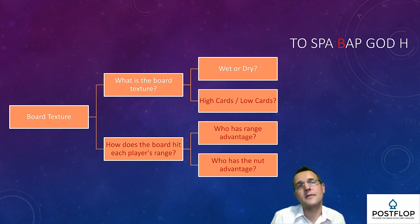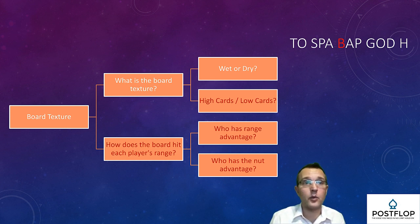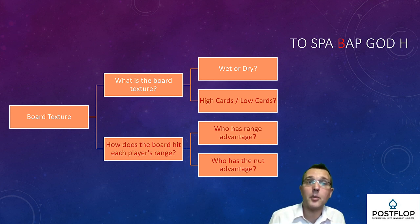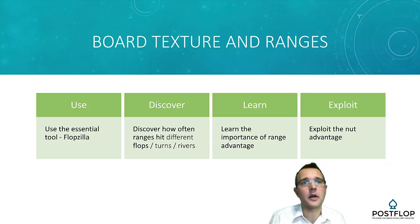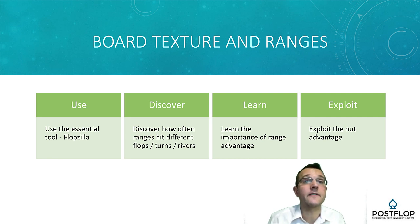The other concept is nut advantage. This is particularly important when pots get large or when planning for large pots. Which player is more likely to be holding the strongest possible hand? It's not always the player with the range advantage. If your opponent holds the nut advantage, you might sometimes prefer to keep the pot smaller. When studying board texture, use Flopzilla or, for Apple users, Poker Cruncher. These tools allow you to visualize how different ranges hit different types of boards, study equity across post-flop streets, and spot opportunities to exploit nut advantage.